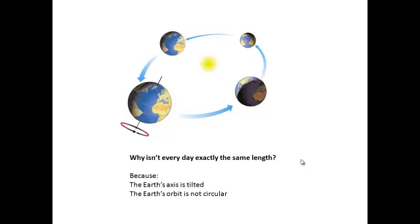Why isn't every day the same length? There are two reasons: because the Earth's axis is tilted by about 23 and a half degrees, and because the Earth's orbit isn't a circle — it's an ellipse.